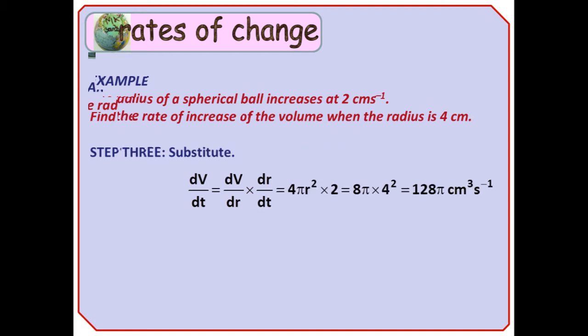Finally, for step 3, we substitute our expression for dV by dr, and our value for dr by dt. So we get 4 pi r squared times 2, or 8 pi r squared, stick it at r equals 4, and we get 128 pi.